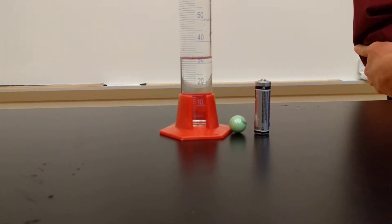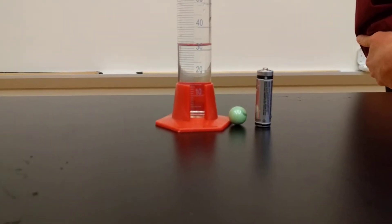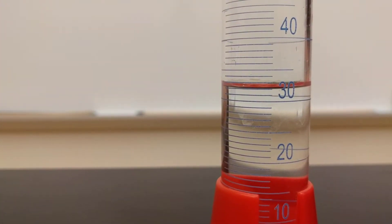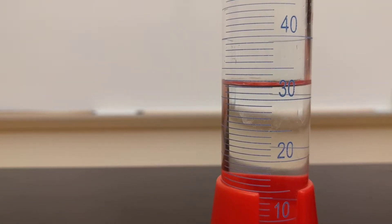So in this case, we're going to take our initial reading, and our initial reading, you're going to get eye level, and it looks to be about 32 milliliters. So you write down your initial.